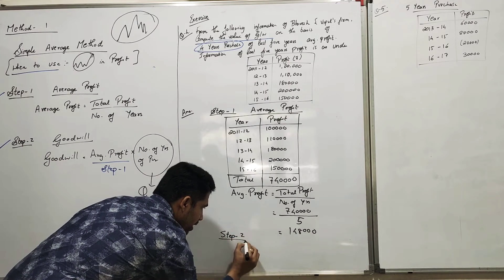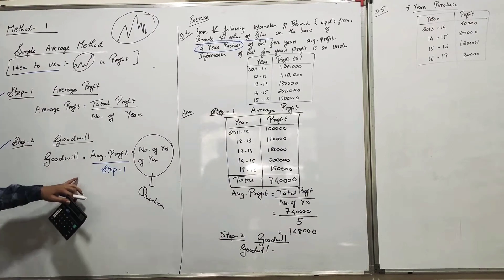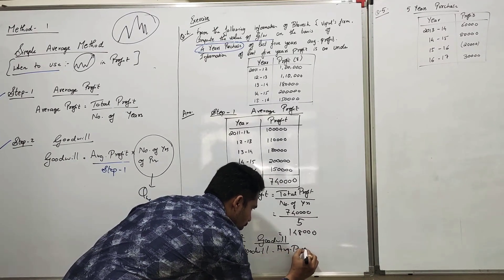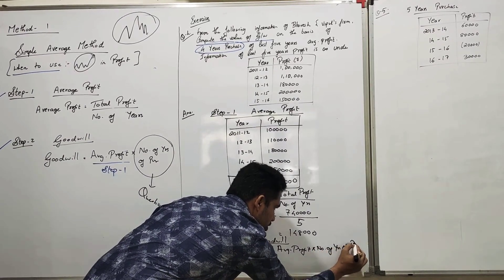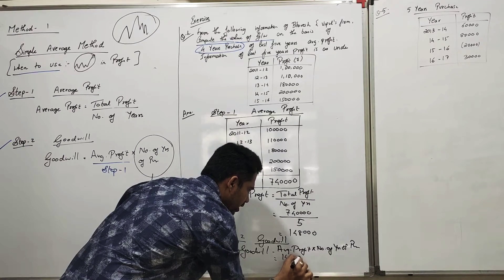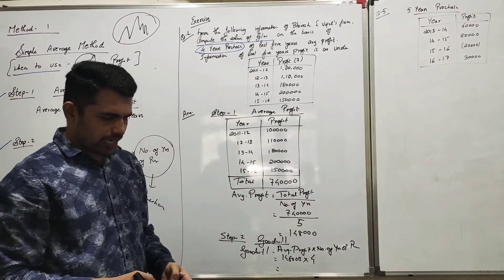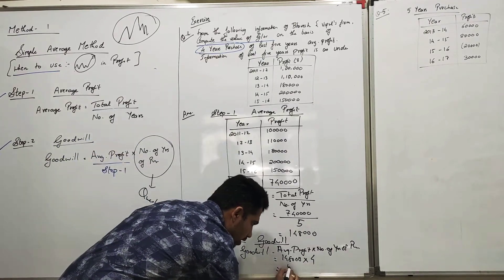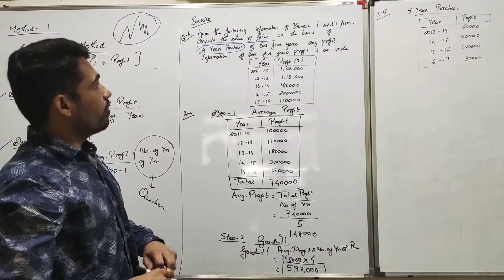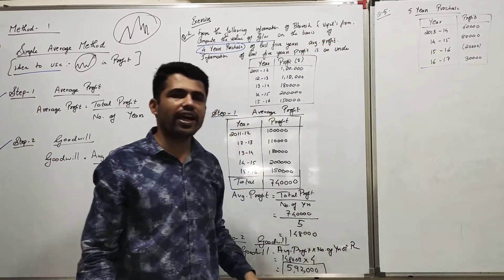Now moving to Step Two — Goodwill. The formula of goodwill is Average Profit multiplied by Number of Years of Purchase. Average profit from Step One is one lakh forty-eight thousand, and the number of years of purchase specified in the question is four. One lakh forty-eight thousand multiplied by four gives the value of goodwill as five lakh ninety-two thousand. That is the goodwill of Bavesh and Vipul's firm.